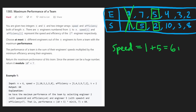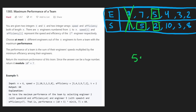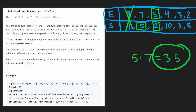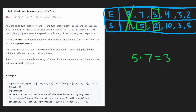At efficiency 5, the total speed in our heap is 7, so the performance is 5 times 7 equals 35. That's not the largest — we previously saw 42. Now moving to efficiency 4, we pop the engineer with the minimum speed from the heap.